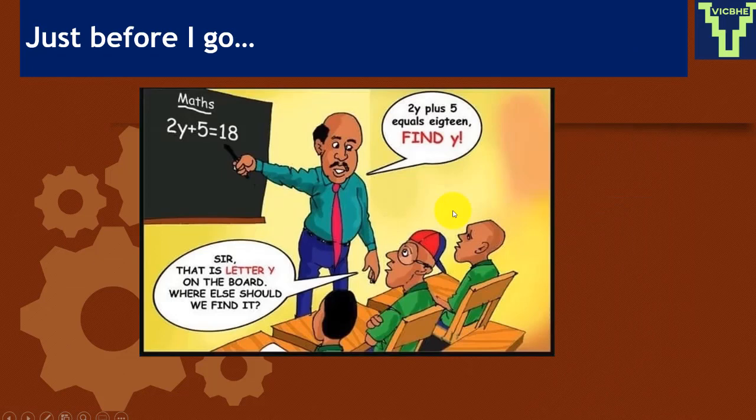Just before I go — a master teacher wrote: 2y + 5 = 18. Find y. A smart student said, 'Sir, there is a y on the board.' The teacher said, 'Find another y.' Well, what is the expansion of C-H-E-A-C-I-Q-G? Ah, you don't know that one — that's another story for the next lesson. Bye!